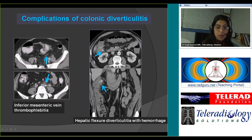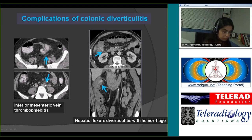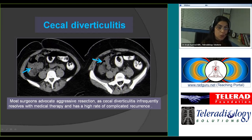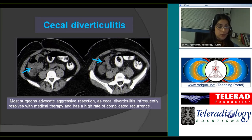Hemorrhage can also be a complication of colonic diverticulosis or diverticulitis. In this case, a diverticulum at the hepatic flexure is inflamed and there is ill-defined contrast within the colon indicating active hemorrhage — no oral or rectal contrast was given, and this density is similar to contrast in the aorta. Example of cecal diverticulitis: the normal appendix is identified, and the right lower quadrant pain is explained by the inflamed cecal diverticulum. Surgeons feel aggressive resection is needed as cecal diverticulitis usually does not resolve with medical therapy.